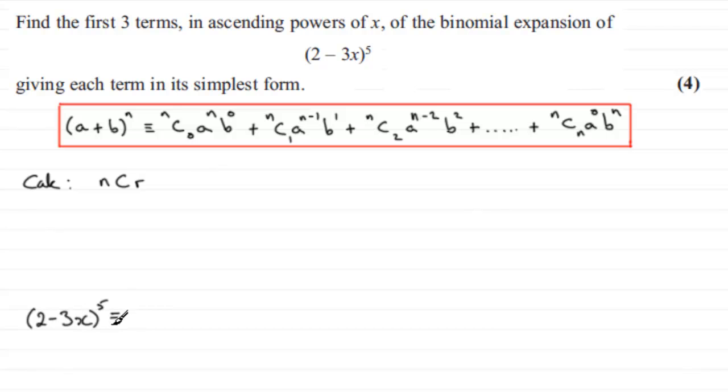What's it identical to? Try and write identical rather than equals because it's not an equation. Well, the a is the 2, the b is the minus 3x, and the n is the 5. So we've got nC0, 5C0. Okay, 5C0.